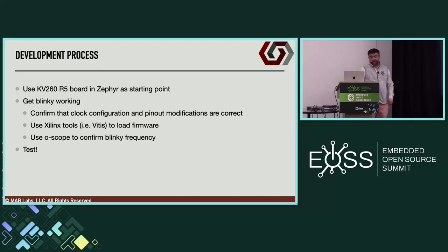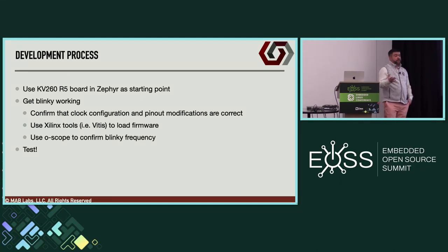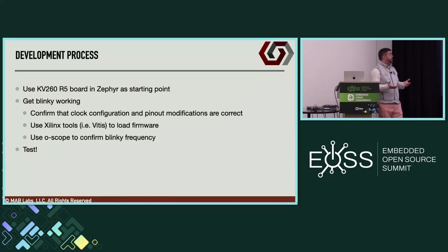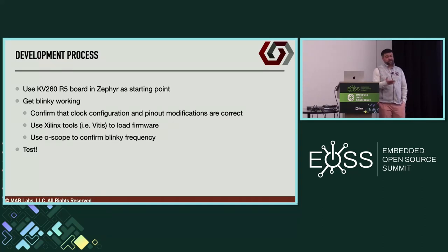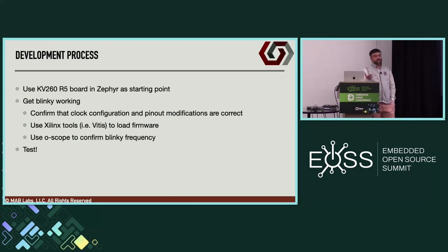There's no Digilent board in Zephyr at the moment, so I found the KRIA KV260 R5 board in Zephyr and used that as a starting point. The first thing I did was confirm pinouts and clock configurations were correct by just getting Blinky working. That's generally my first step with any new board — and it's not sufficient to just eyeball it blinking at one second; you actually need to hook up a scope to confirm, say, 100 milliseconds. Then I got UART working: if Hello World works, that gives higher confidence that clock configurations are correct, since UART is sensitive to clock accuracy.